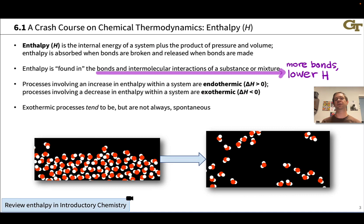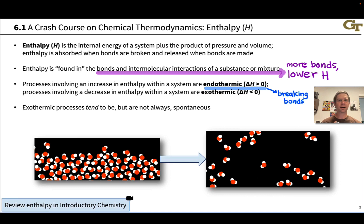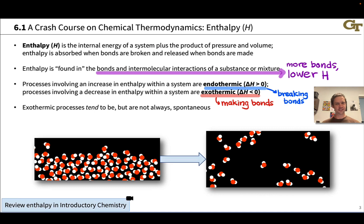We have terms that refer to changes in enthalpy during a phase change or chemical reaction. Endothermic processes have a positive enthalpy change — enthalpy increases — and correspond to breaking bonds or intermolecular forces, such as evaporation or bond cleavage. Exothermic processes, in which enthalpy is released or goes down, correspond to making bonds or intermolecular forces, such as condensation or bond formation. Exothermic processes tend to be spontaneous, but not always — entropy and the second law also play a role.